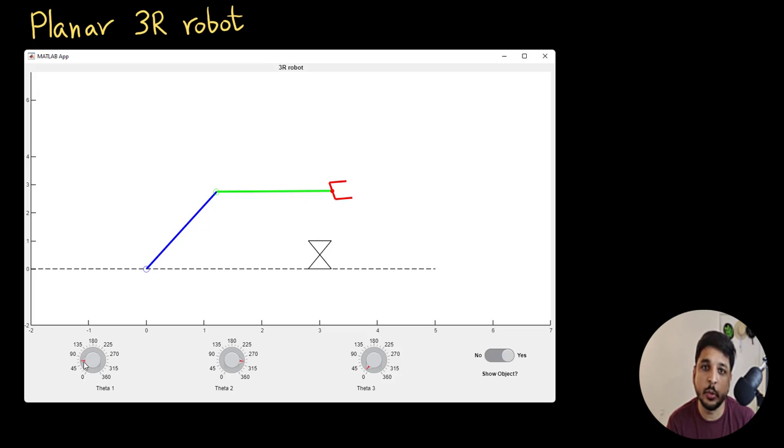That is what should be the value of theta1, theta2 and theta3 to make the end effector come to such a position that it can grab the object. Just by trial and error, I can see that in this case,